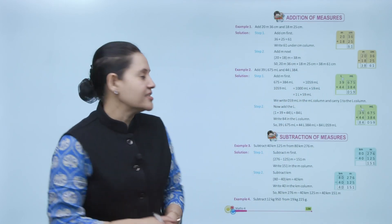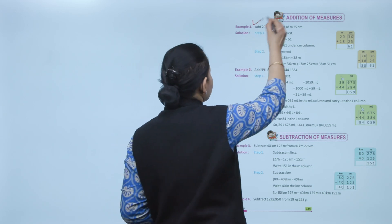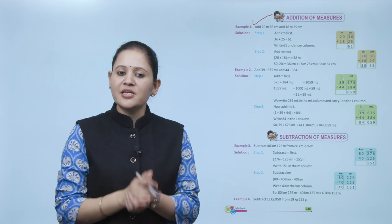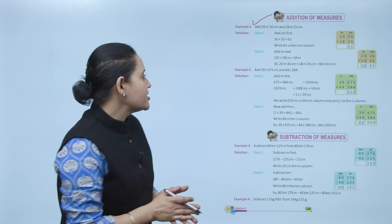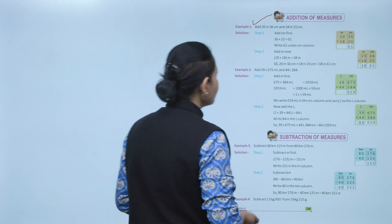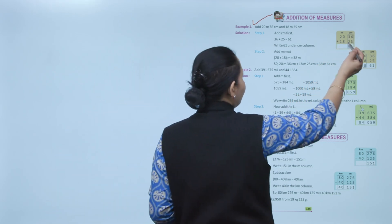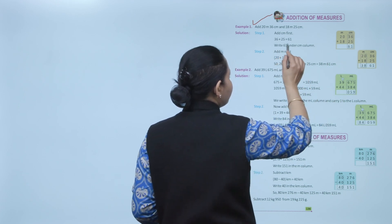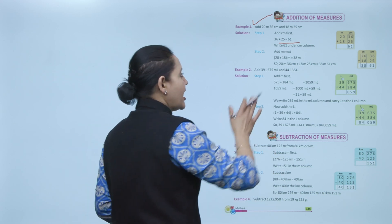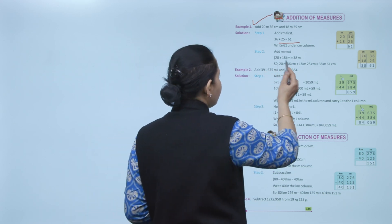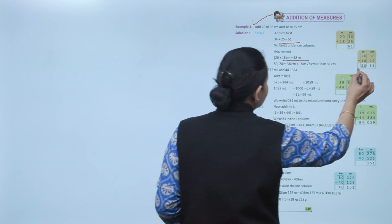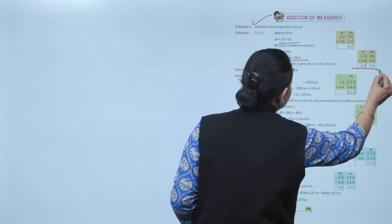Next is addition of measures. Example: add 20 meters 36 centimeters and 18 meters 25 centimeters. Always add meters to meters and centimeters to centimeters. First add centimeters: 36 + 25 = 61 centimeters. Then add meters: 20 + 18 = 38 meters. The answer is 38 meters 61 centimeters.